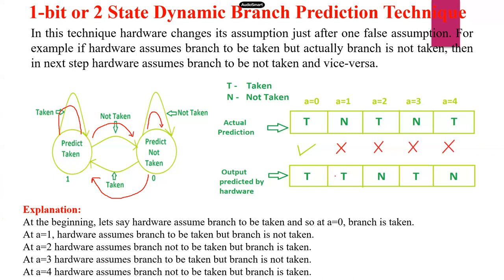The next time, the prediction is: hardware prediction is taken branch, but the actual prediction is not taken. So here both are in a false condition. The control will be transferred from taken branch to not taken branch — false. Now my hardware assumption is not taken, but the actual prediction is true. Both are mismatched. So if the prediction is not taken but the actual prediction is taken, again the control will be transferred from 0 to 1.